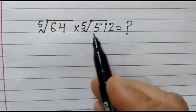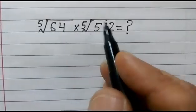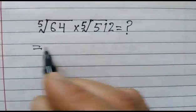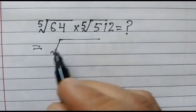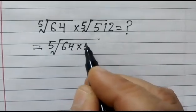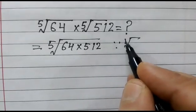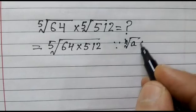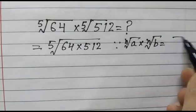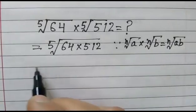We have to solve this problem: fifth root of 64 into fifth root of 512. In the first step, we can write this as fifth root of 64 into 512, because the nth root of a into the nth root of b is equal to the nth root of a times b.